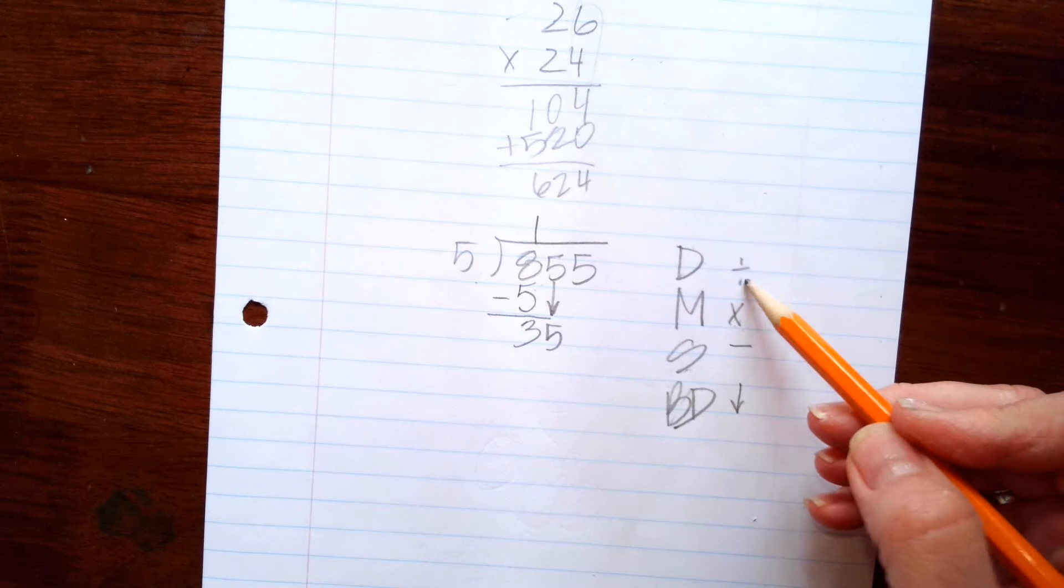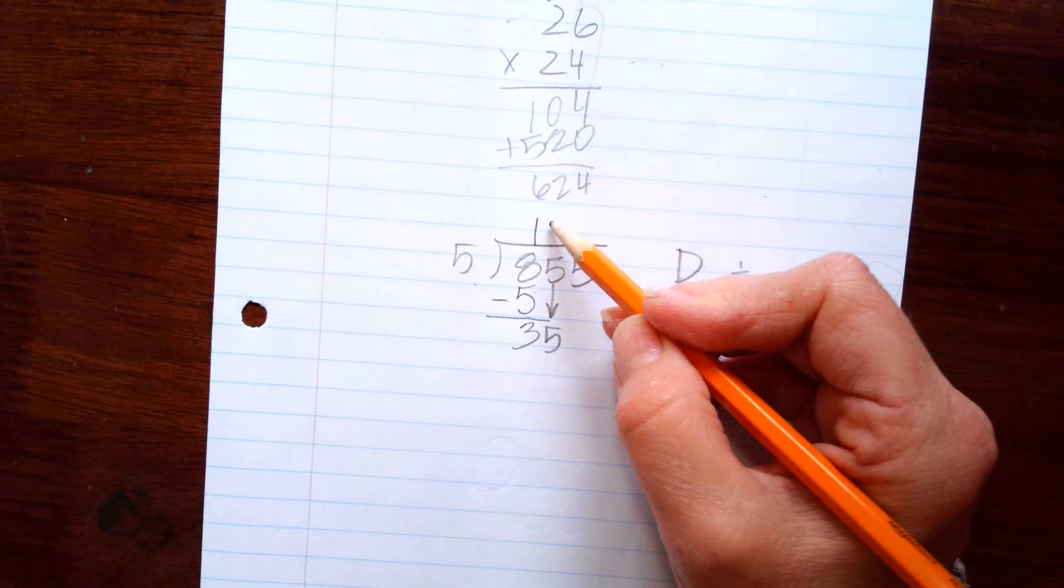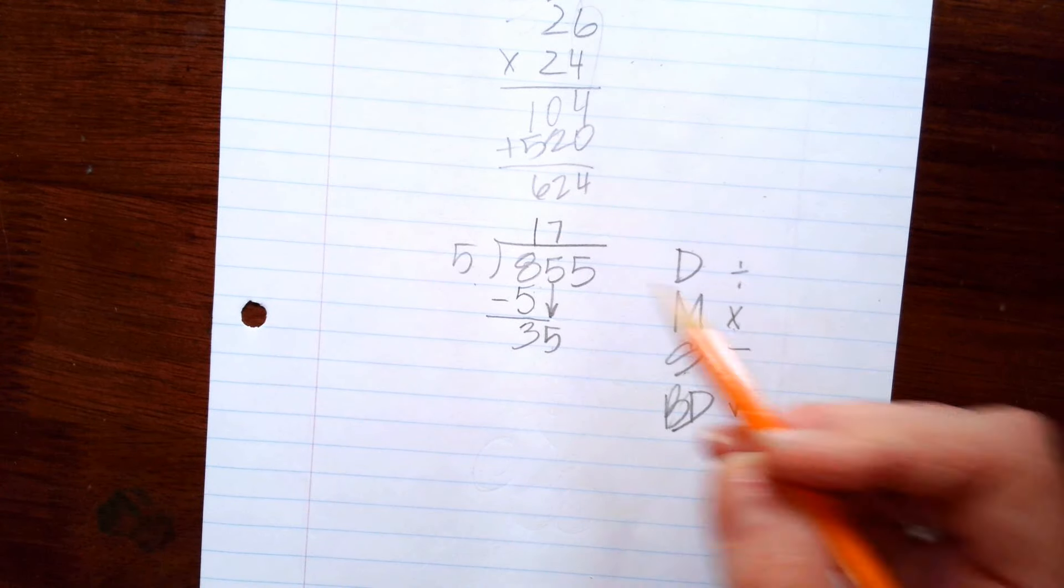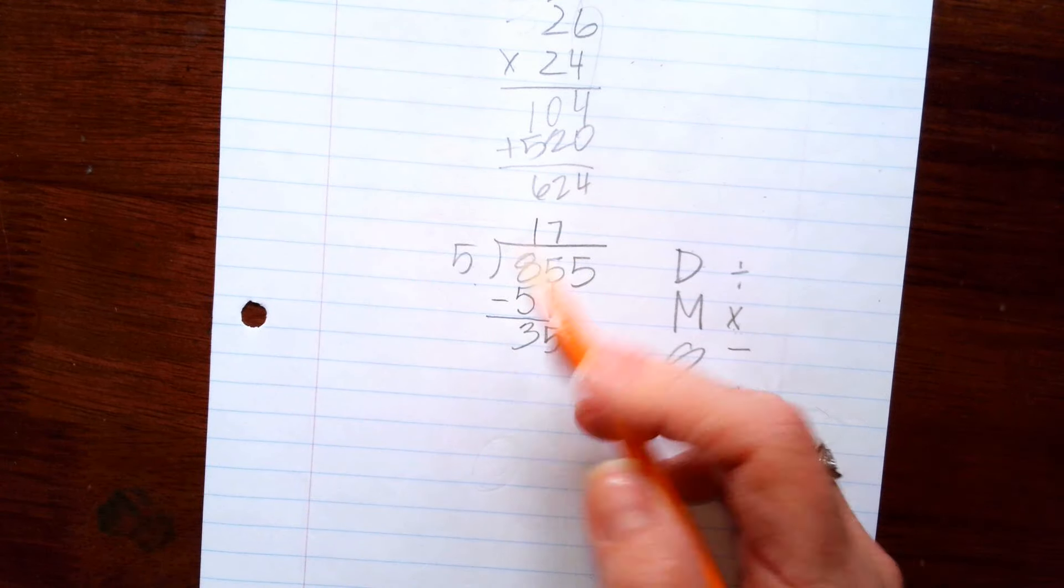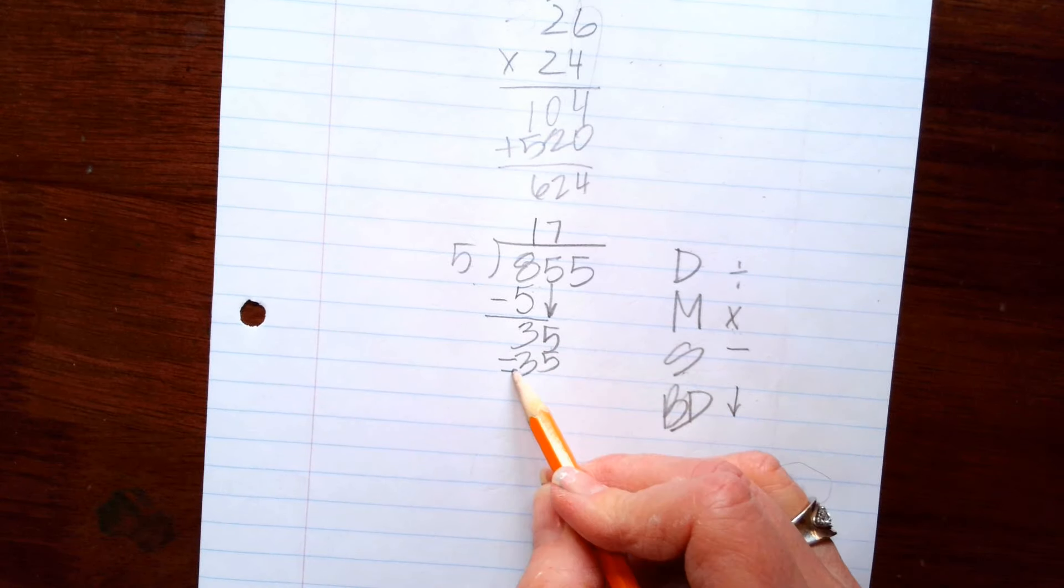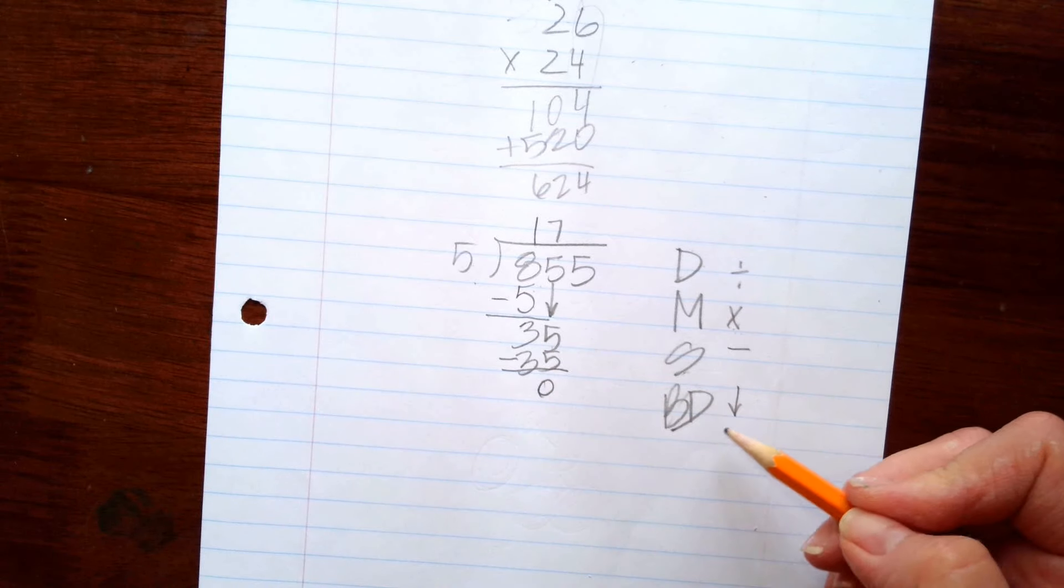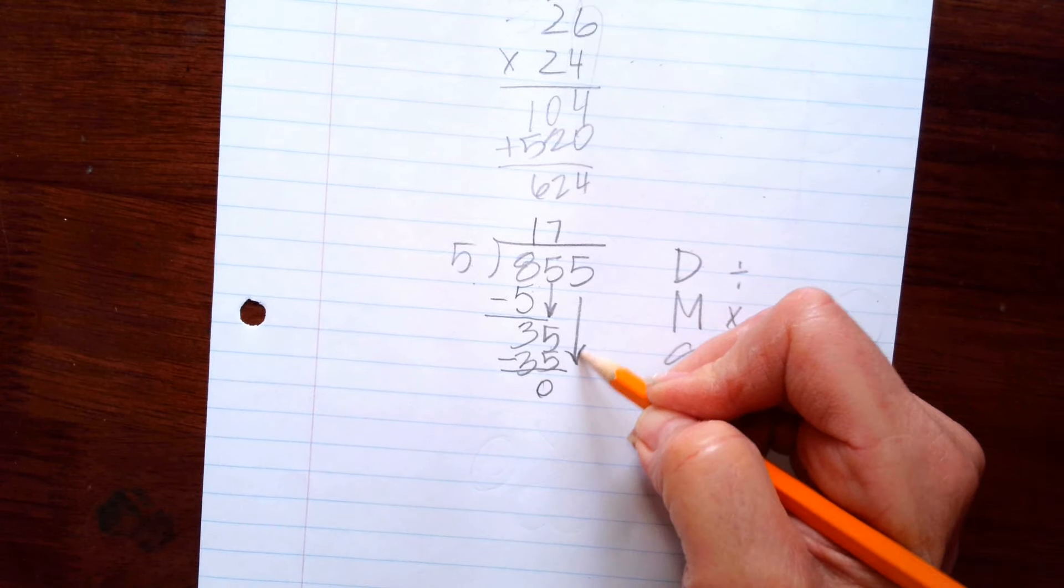Now we go back to dividing. Five goes into thirty-five seven times. Now we multiply. Seven times five is thirty-five. Now we subtract. Thirty-five minus thirty-five is zero. And then we bring down another five.